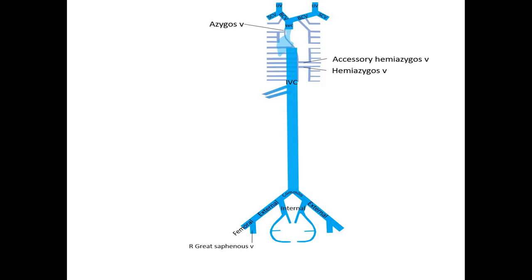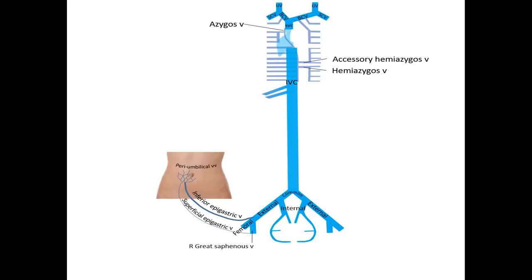The external iliac veins are continuous with the femoral veins which receive the great saphenous veins. We will now also add some of the veins draining the anterior abdominal wall: the inferior and superficial epigastric veins. Blood from the rectum drains to the middle and inferior rectal veins which eventually drain to the internal iliac veins. Finally, the inferior vena cava receives the hepatic veins carrying blood from the liver.